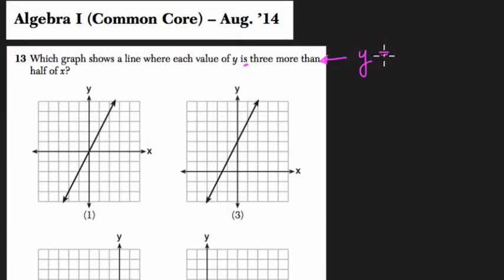y equals 3 more than, 3 plus one half of x. That's what it's saying. Or you might typically write this as y equals 3 plus x divided by 2. These are equivalent. One half of x, or take x and divide by 2, that's the same thing.